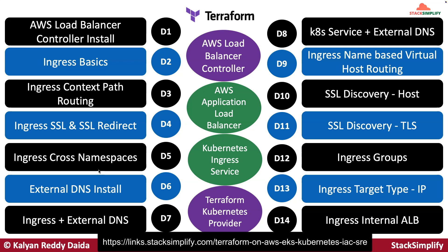This completes the demos for Kubernetes ingress services — all 14 demos from D2 to D14. Whenever you use the Kubernetes ingress service, it creates an AWS application load balancer. All these use cases are automated using Terraform itself.